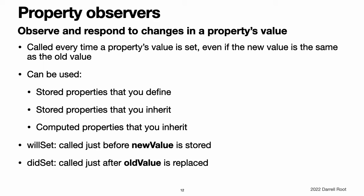willSet is called just before the value is stored. didSet is called immediately after the new value is stored. If you implement a willSet observer, it is passed the new property value as a constant parameter. You can specify a name for this parameter as part of your willSet implementation. If you do not write the parameter name and parentheses within your implementation, the parameter is made available with the default parameter name of newValue.